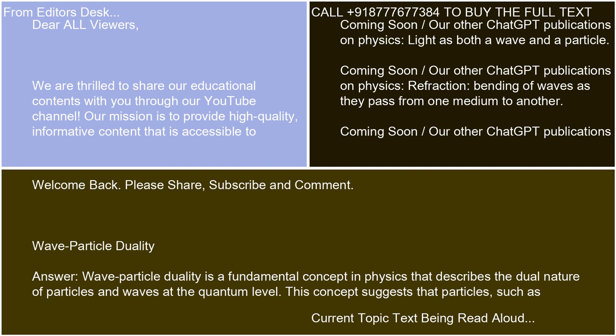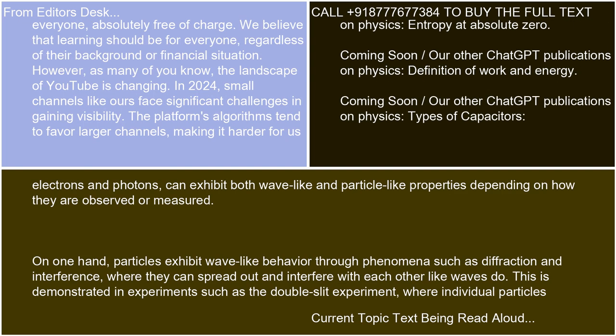Wave-particle duality is a fundamental concept in physics that describes the dual nature of particles and waves at the quantum level. This concept suggests that particles such as electrons and photons can exhibit both wave-like and particle-like properties depending on how they are observed or measured.